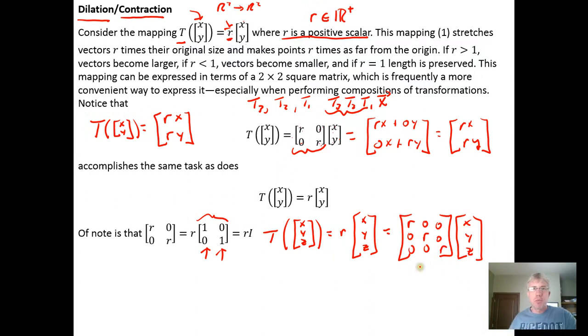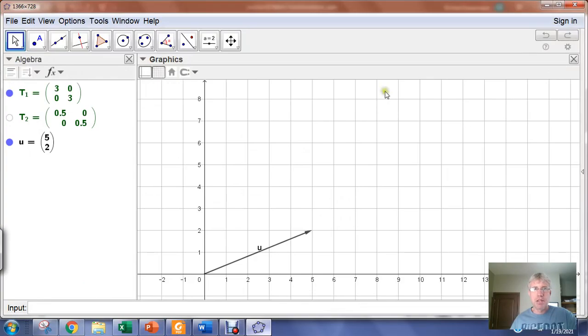When we put it in matrix form, it's nice because if we're working in GeoGebra, we can put these transformation matrices into GeoGebra. So here I have a vector U, (5, 2). This matrix right here, T sub 1, would make the vector U three times longer.